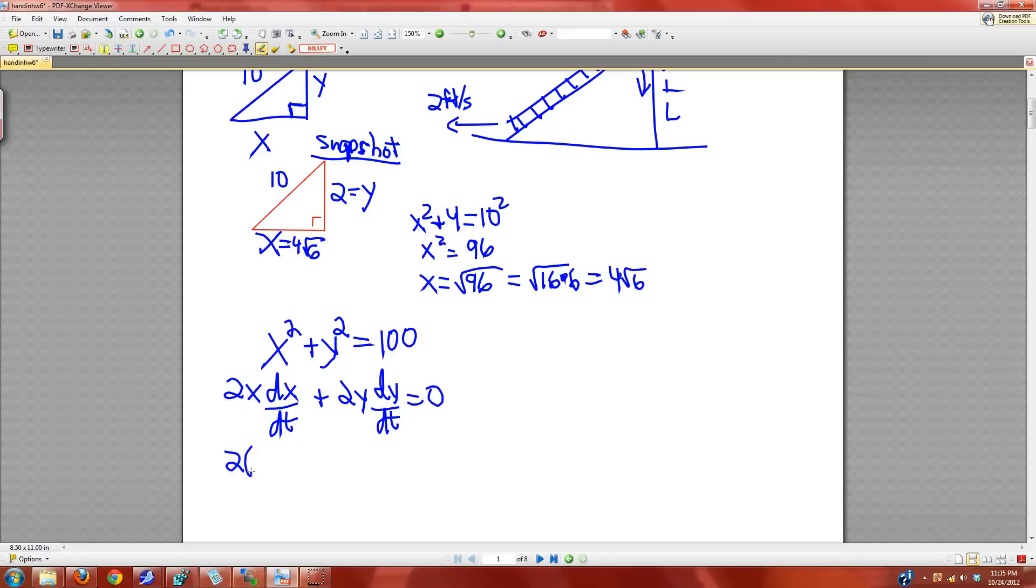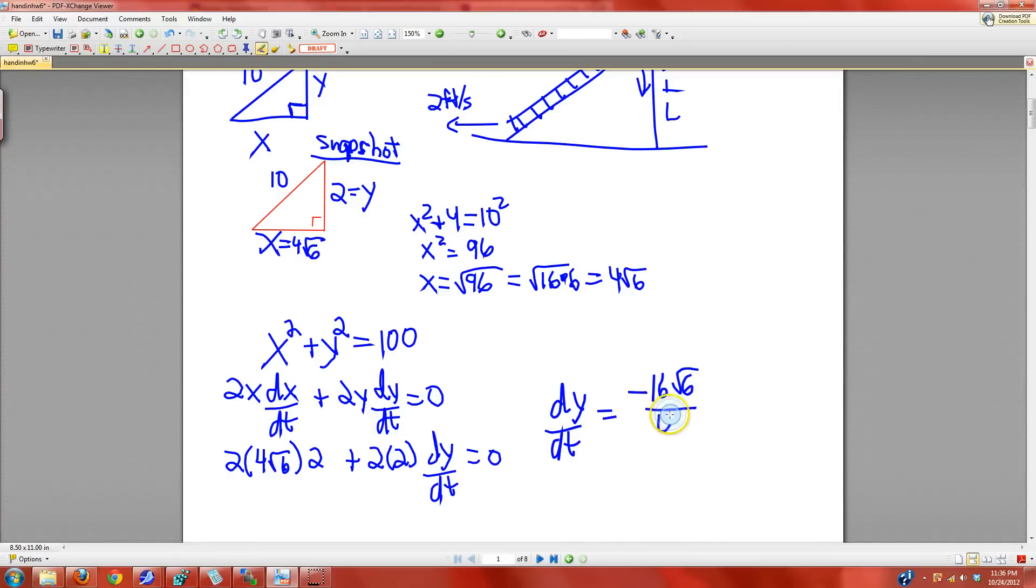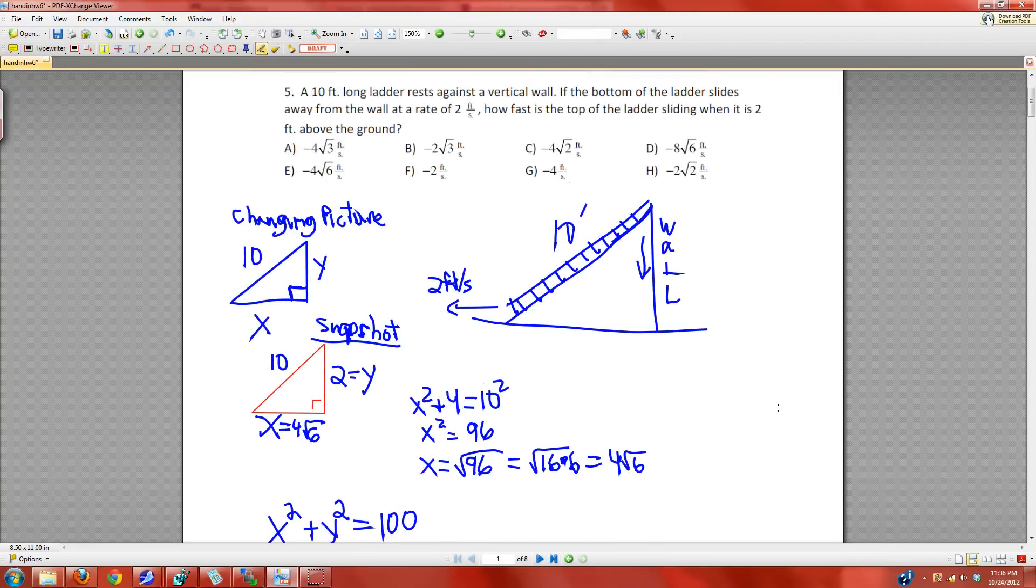So plug in all the players and find out what dy/dt is. So we have 8, and then 16... yeah, so 16 root 6. dy/dt is negative 16 root 6 all divided by 4 or negative 4 root 6 feet per second.